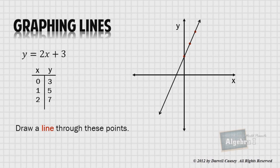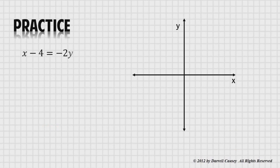Let's try a practice problem. x minus 4 equals negative 2y. The first thing I would do is put it in a y equals form. So let's divide everything by negative 2 and perform the operations. And we get negative 1 half x plus 2 equals y.